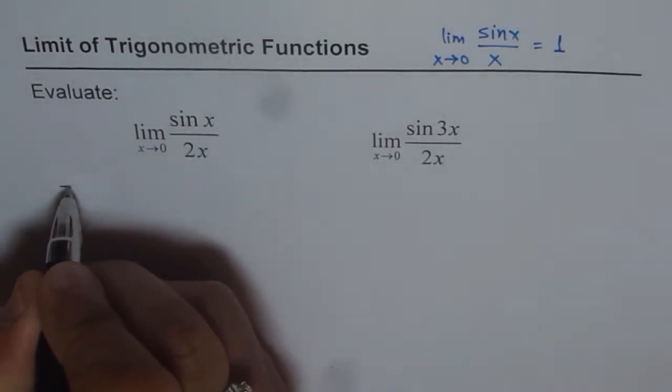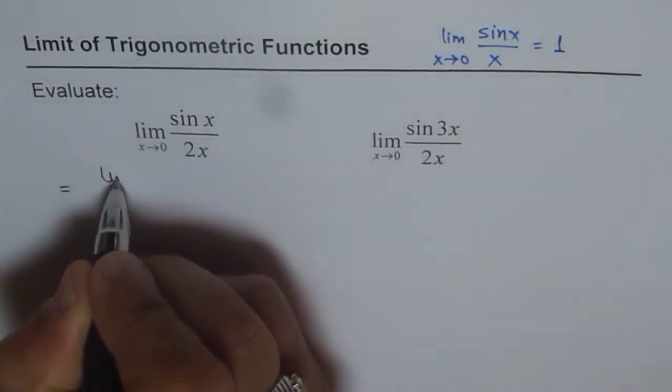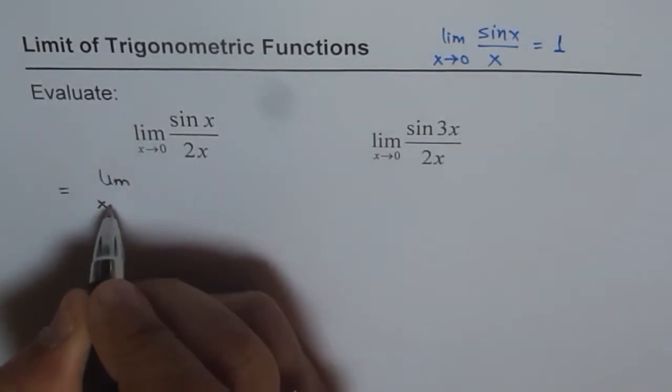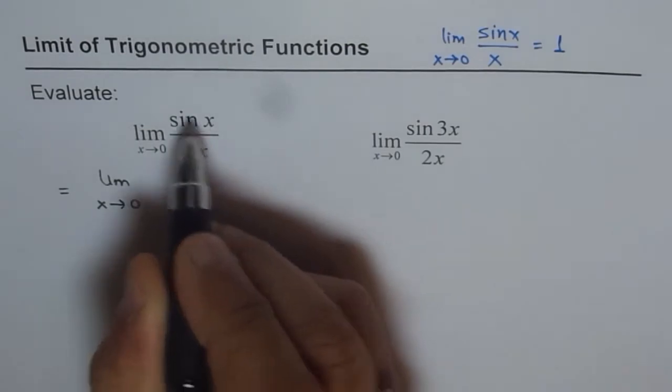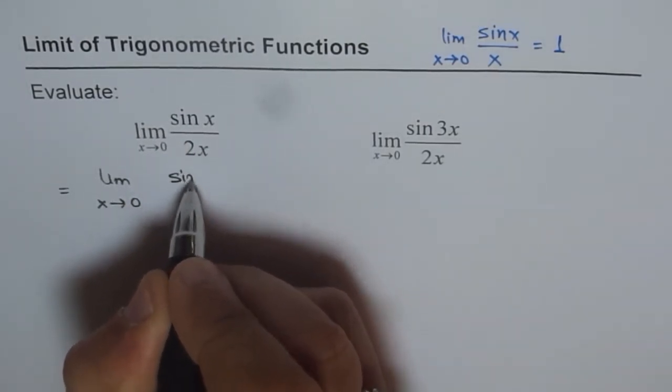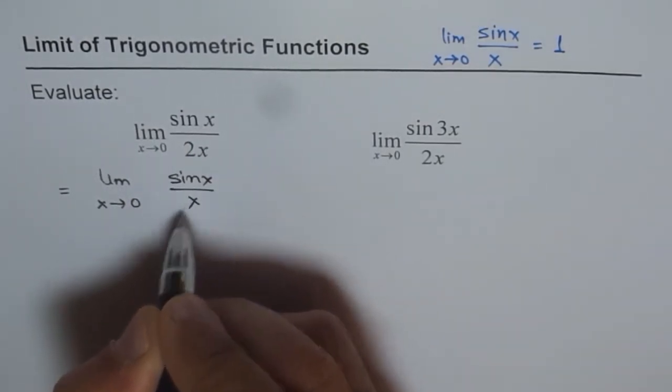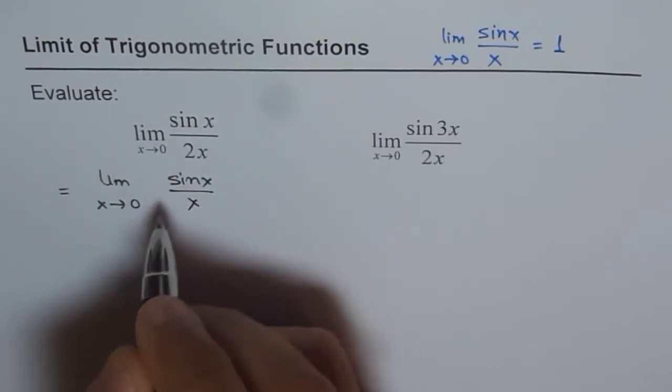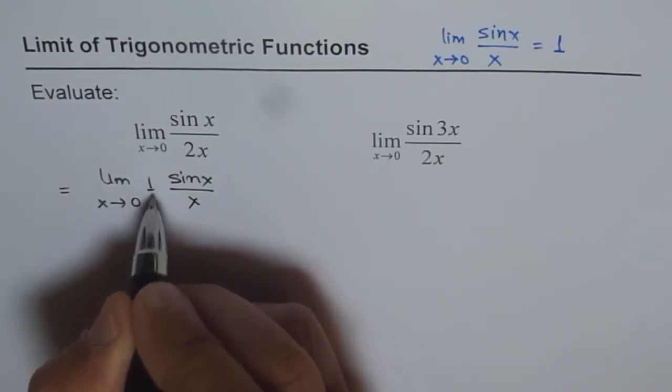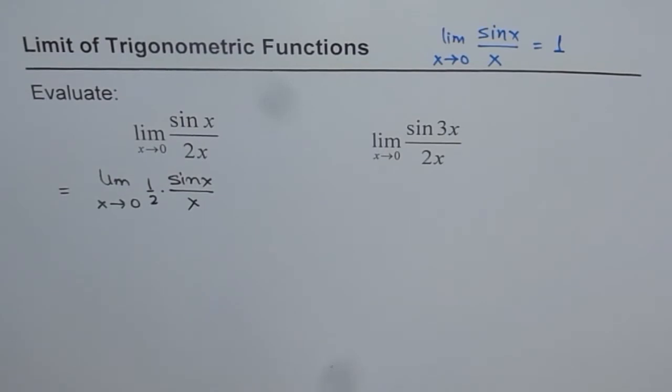So we can write this as limit of the function as x approaches 0 and we'll break this function as sin x over x and we can take half away from it. So it's like kind of half. Do you see that?